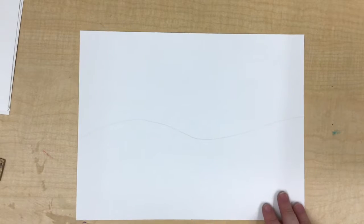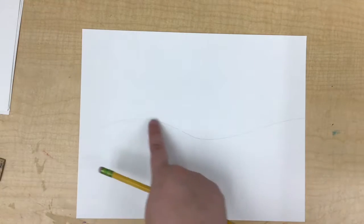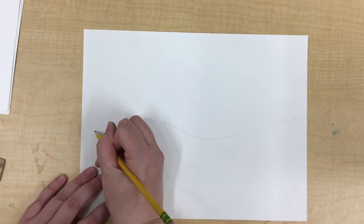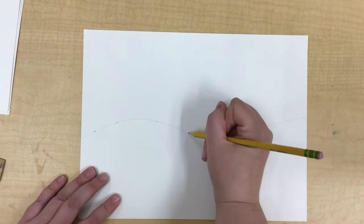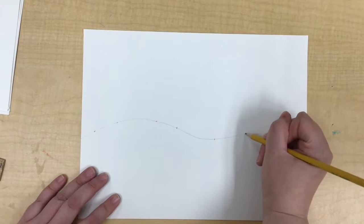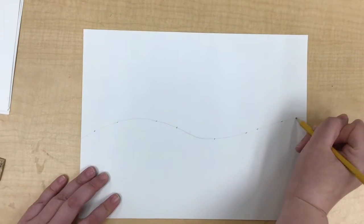Next you're going to put anywhere from seven to ten dots on this wavy line across the page and they can be little. One, two, three, four, five, six, seven, eight, nine.